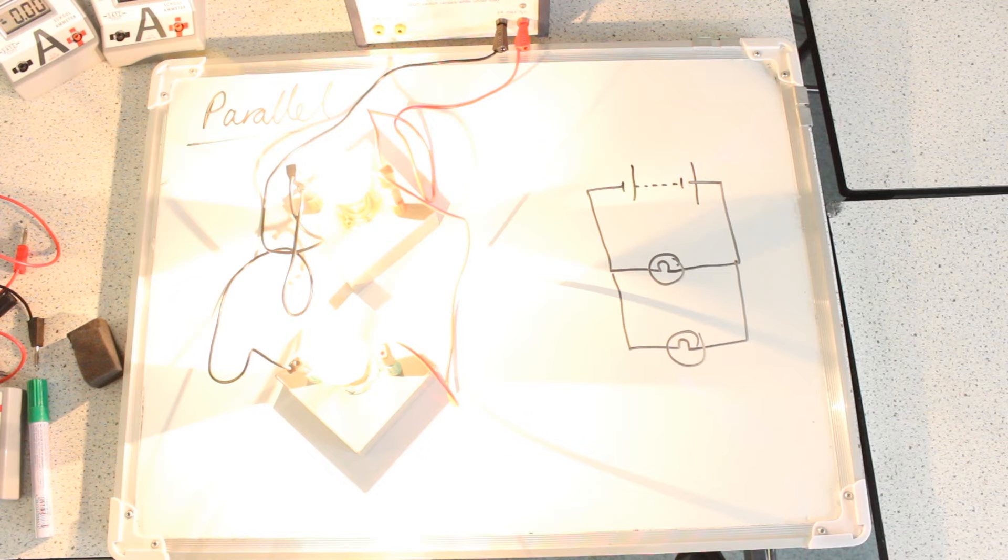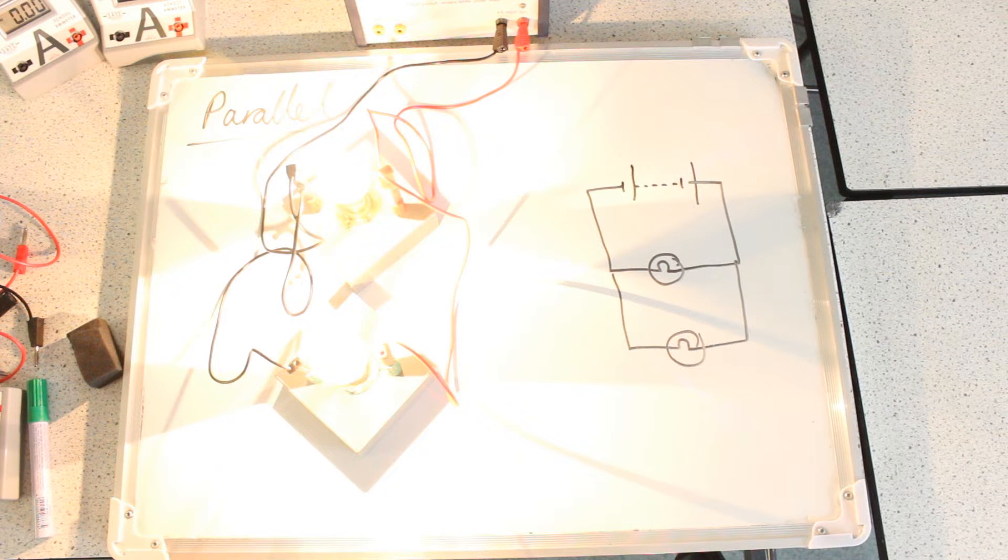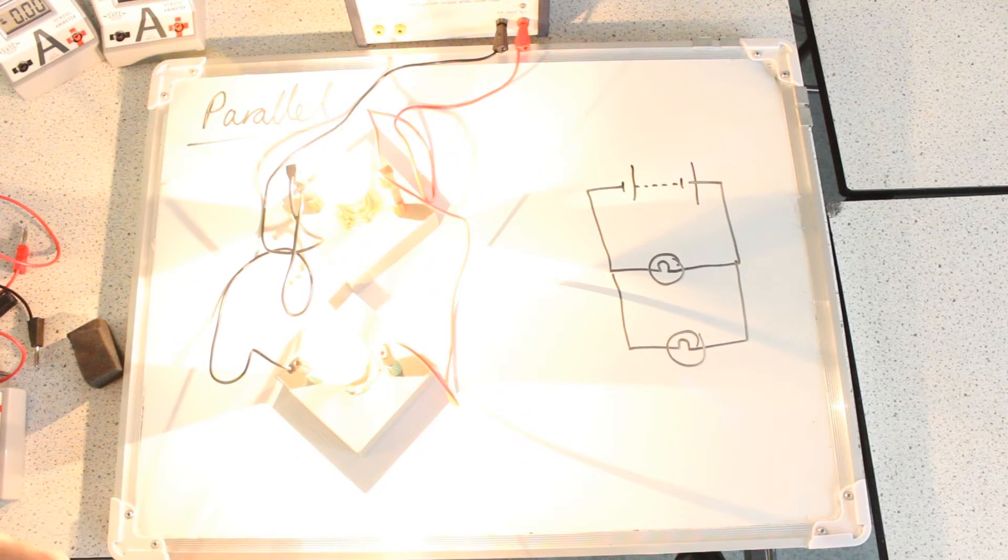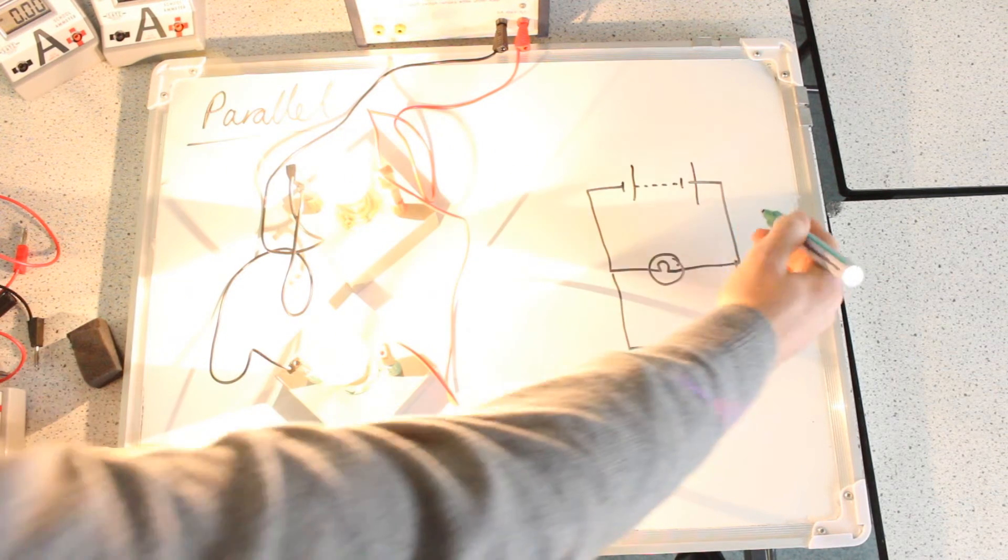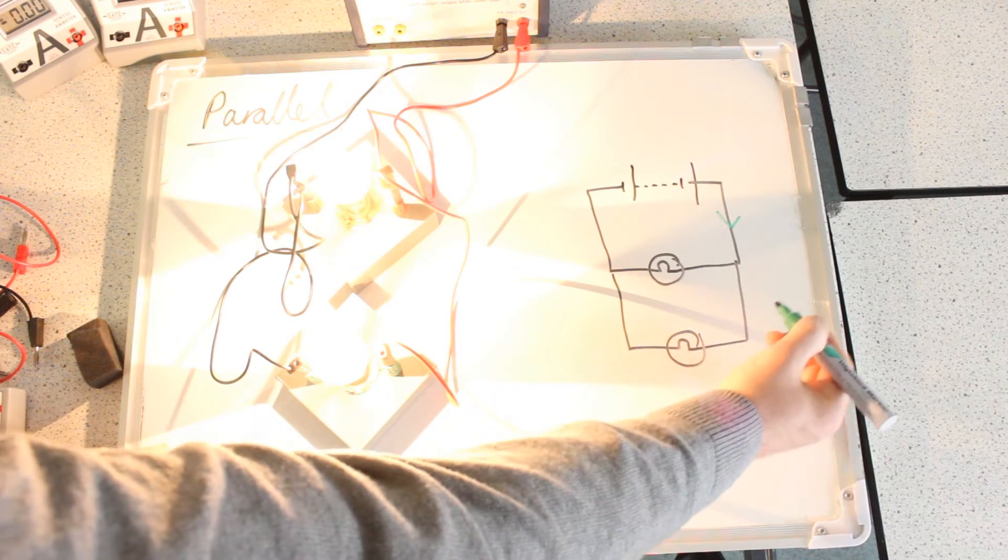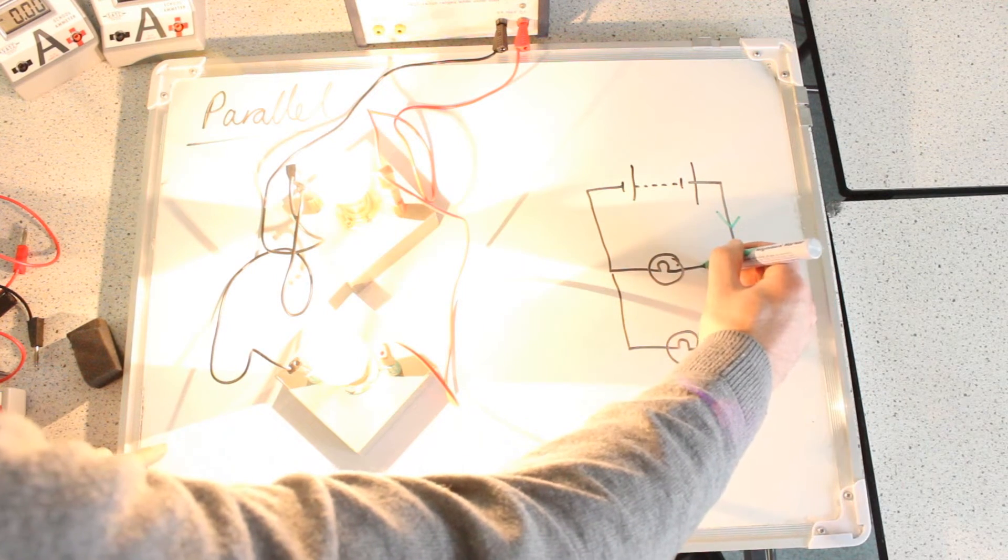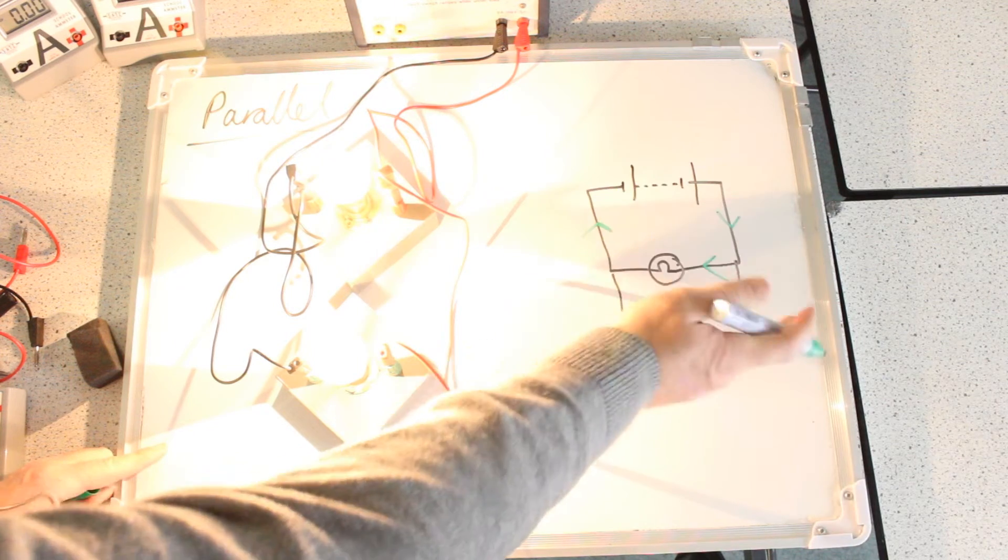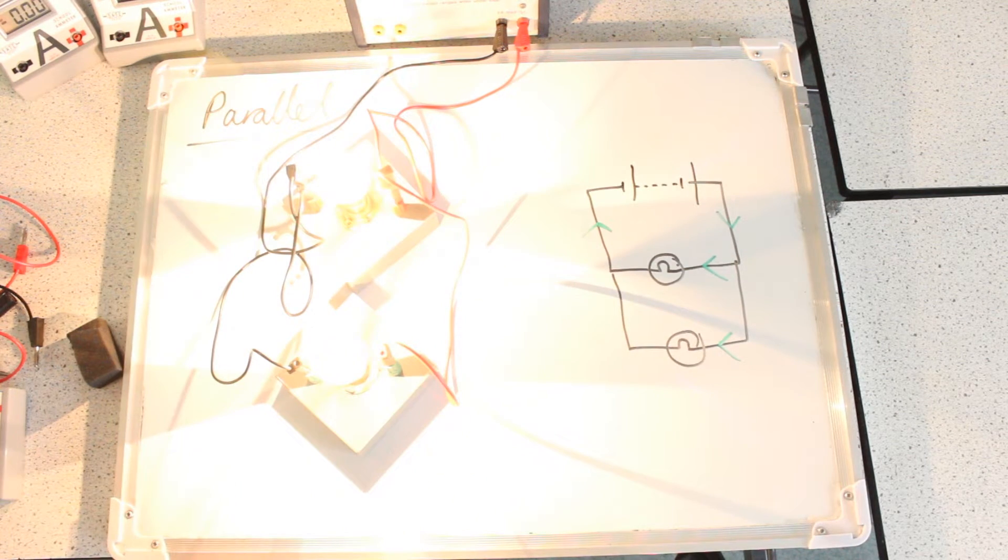There we go, so it's all working. I'm ready to connect my meters. And I'm going to do currents first. And this time I'm going to place one ammeter there, one in the first branch, one in the second, and one on the other side in the main branch of the circuit.